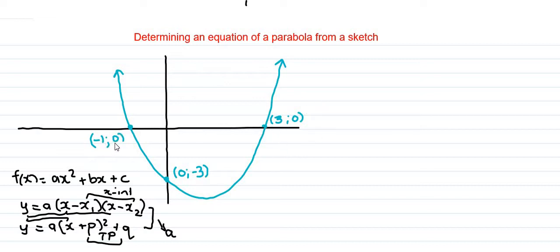We have point (-1, 0). Because it's zero, this is an x-intercept. We have point (3, 0). Because it's zero as well, this is an x-intercept. Then we have this point (0, -3). So this is any other point.